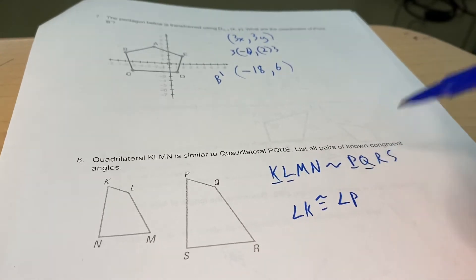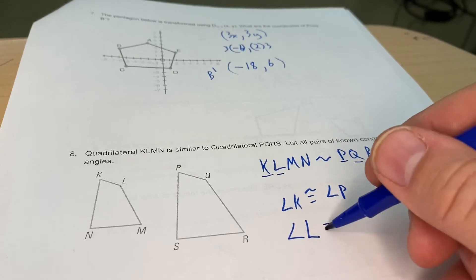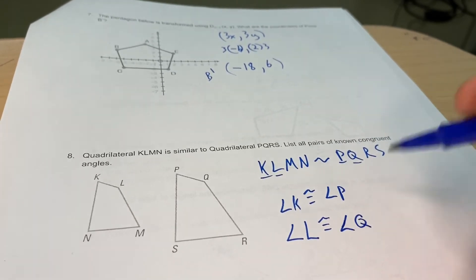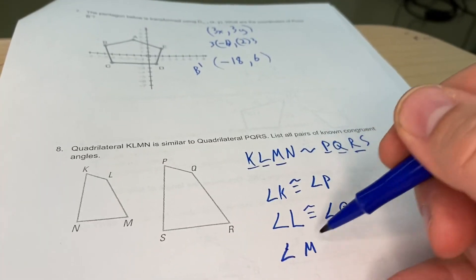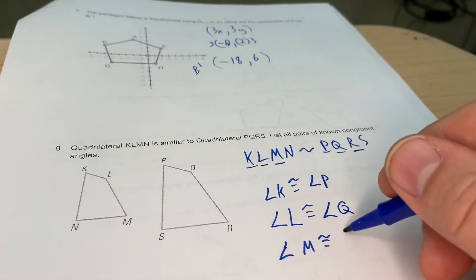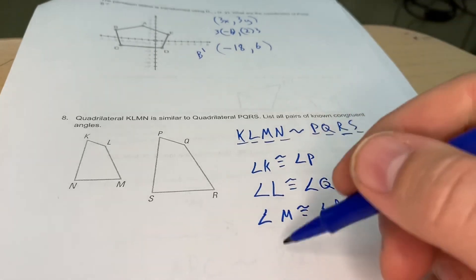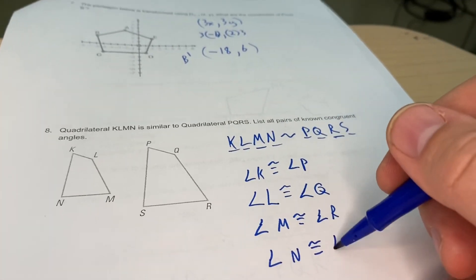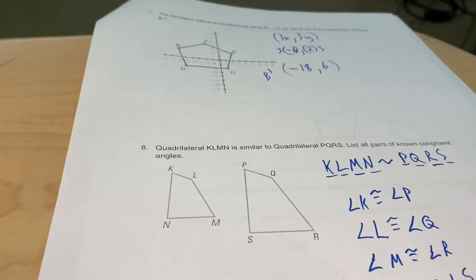So angle K is congruent to angle P. The second one and the second one match up, that's angle L, apologies that my angle symbol looks exactly like my L, and angle Q. The third one and the third one, that's angle M is congruent to angle R. And then the last one here, angle N is congruent to angle S. So that's how those are all going to match up. We've got the similarity statement, they go in the same order.